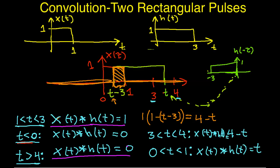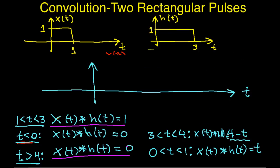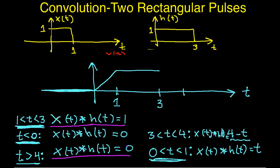Let's draw the convolved result. For t less than 0, it's 0. Between 0 and 1, the convolution is t — it begins at 0 with slope 1. For t between 1 and 3, it equals 1. For t between 3 and 4, it's 4 minus t: when t equals 3 we get 1, and when t equals 4 we get 0 — a line going down with slope negative 1. For t greater than 4, we have 0 again. So this is the convolution of two rectangular pulses.